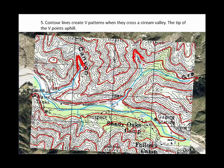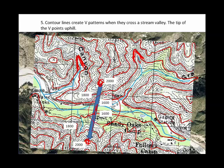Water flows down; the V's point up. What if I wanted to hike from this spot here to this spot here? I would obviously be heading downhill — starting at 2,000 feet, then 1,800 feet, 1,600 feet. Then I would cross the stream, go across this really flat area, and then hit 1,600 feet again, start uphill, hit 1,800, and finally back to 2,000.